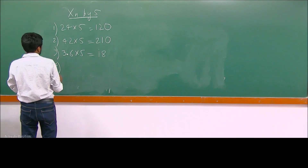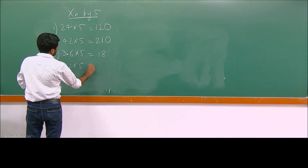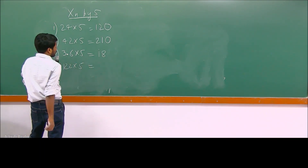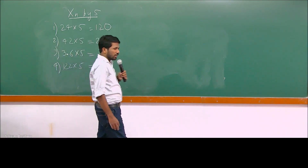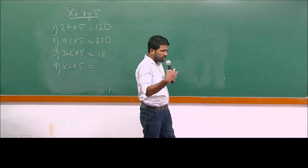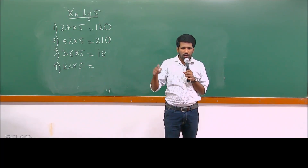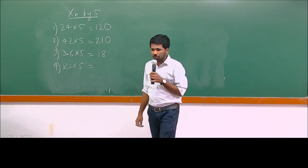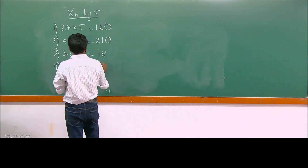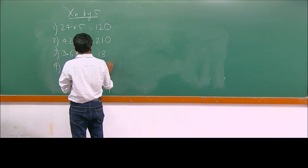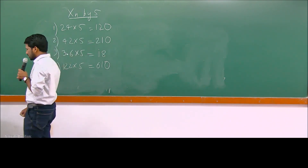Now for a 3-digit number: 122 into 5. Take the half of 122, which is 61, then shift 1 decimal to the right or attach a 0 at the end, giving 610. So 122 into 5 is 610.